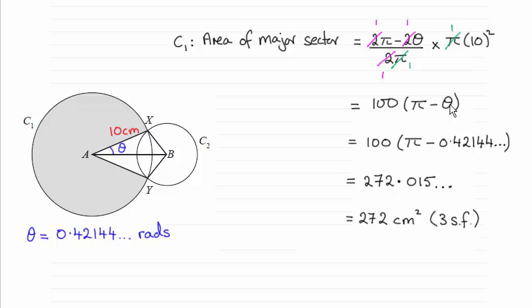So I've substituted theta from earlier into here, and then just worked it out. To leave me then with 272 centimeters squares to three significant figures.